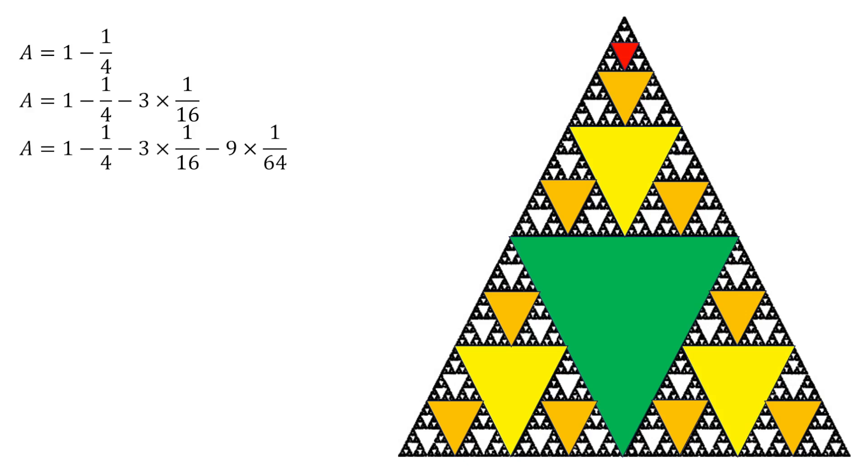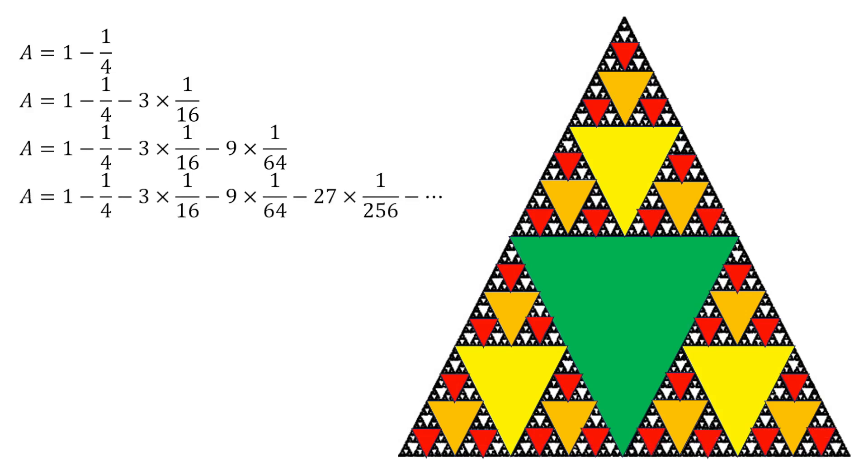That will be one-fourth of one sixty-fourth, so that is one two-hundred-fifty-sixth. And how many of those are there? Let's count... there are twenty-seven of them.